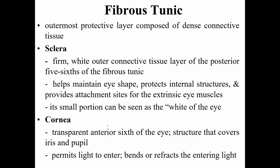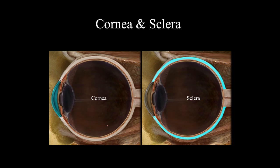The fibrous tunic is the outermost protective layer composed of dense connective tissue. It consists of the sclera — a firm white connective tissue layer forming the posterior five-sixths — which helps maintain eye shape, protects internal structures, and provides attachment sites for extrinsic eye muscles. The cornea is the transparent anterior sixth, covering the iris and pupil. It permits and refracts light. The sclera is opaque and does not let light through, while the cornea is transparent.